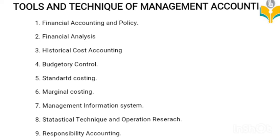Third: historical cost accounting — the recording of actual costs after they are incurred. Fourth: budgetary control. In budgetary control, expenditure and revenue are pre-determined, actuals are compared with budgets to reveal deviations, and corrective actions are taken to address unfavorable deviations. Fifth: standard costing. Costs are pre-determined on a scientific basis, actual costs are compared with standards, variances are analyzed to find causes, and action is taken to remove unfavorable variances.